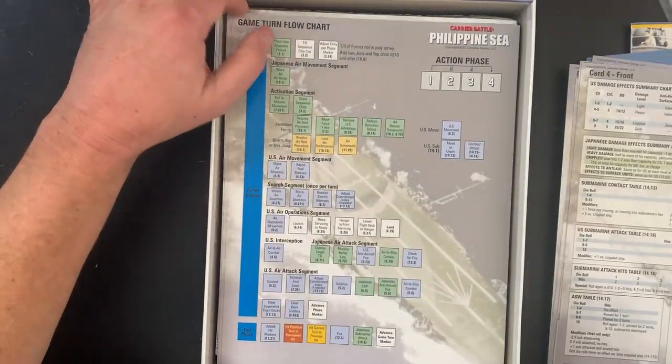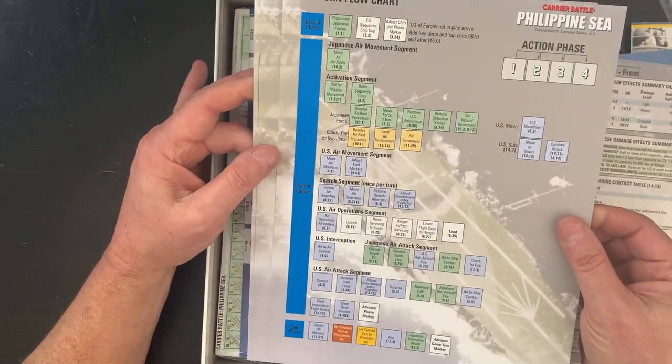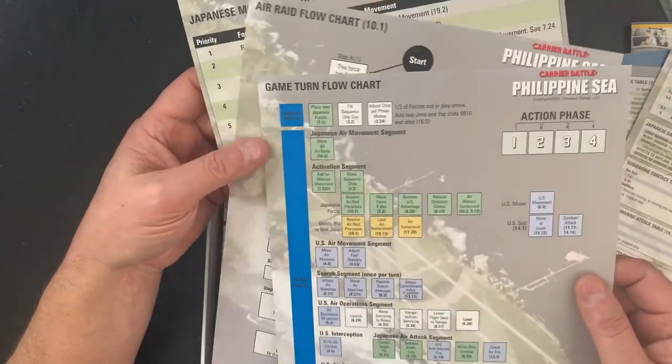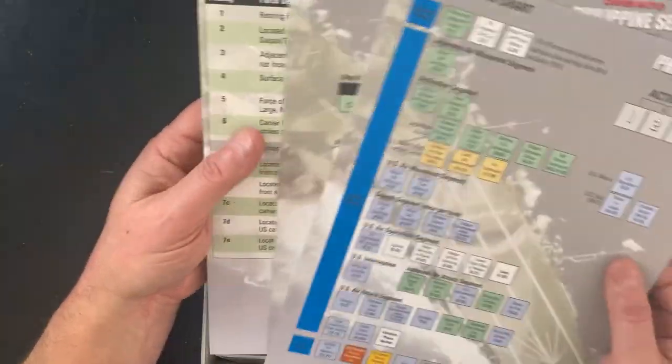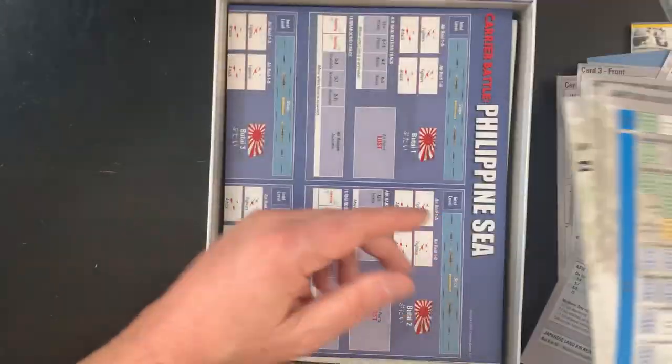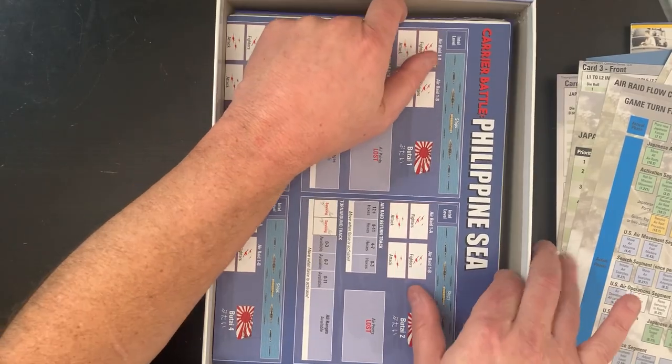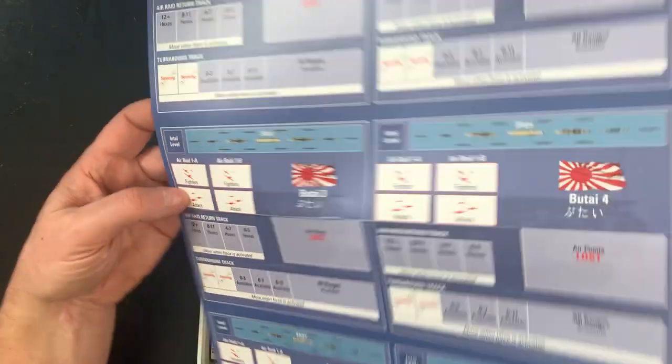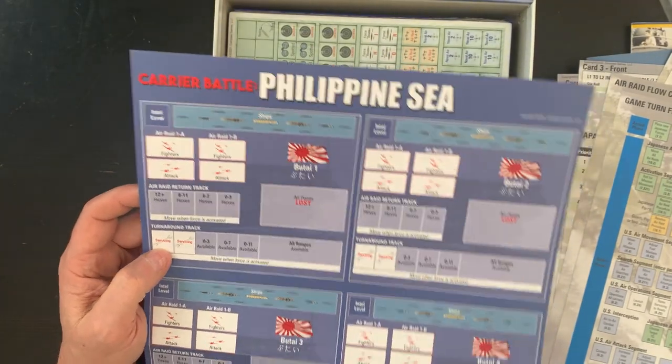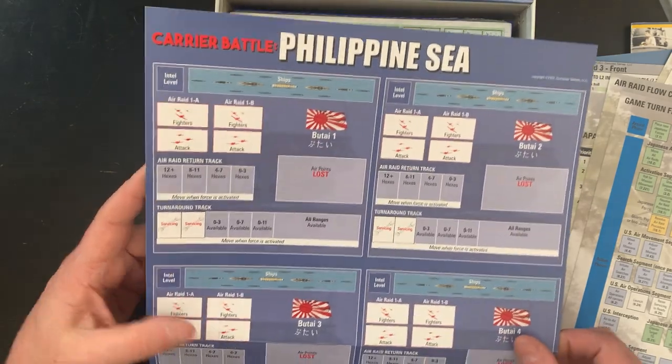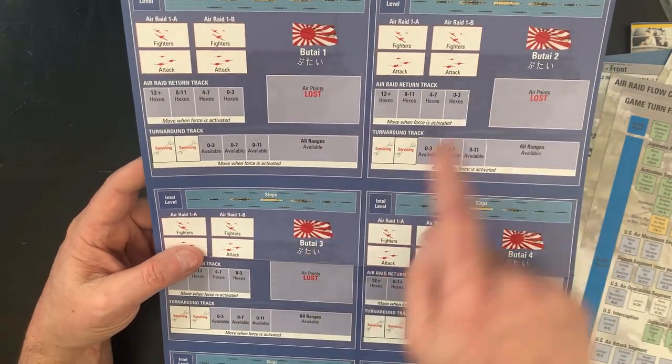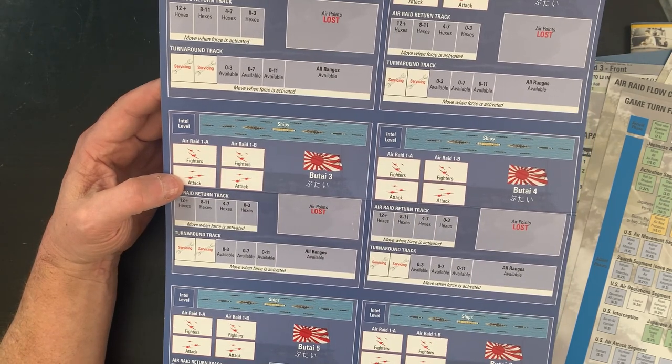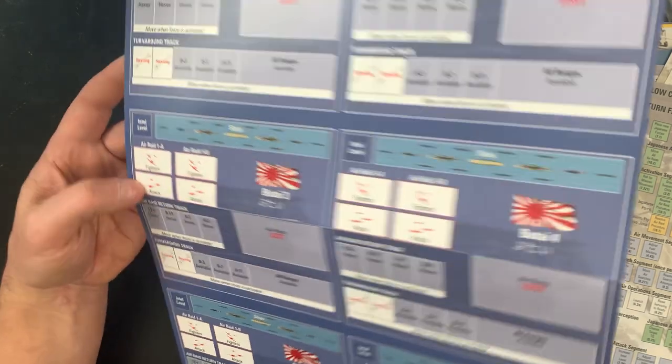Card front. Player aid cards. Here we go: turn flow. Good card stock. Air raid flow chart, game flow chart, Japanese movement priorities. Nothing on the back of these. Here's where you can allocate stuff. Nice. The Philippine Sea, nothing on the back of that. Fighters, attack, servicing, what's lost. This is Butai 1, 2, 3, 4, 5, and 6. So these are your Japanese Butai's. Again, nothing on the back of that.